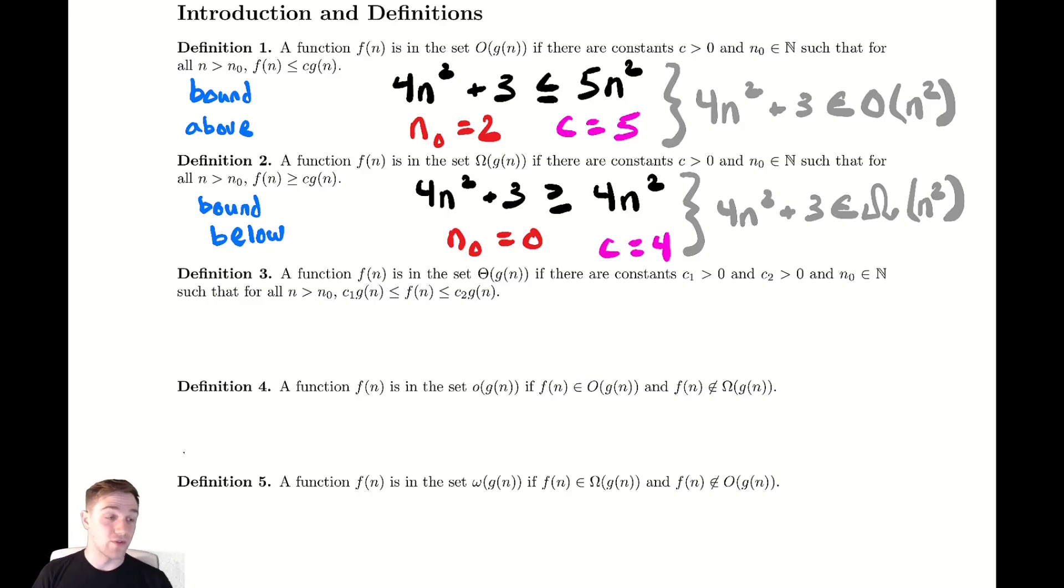So the first definition, the one for big O, is designed to help us capture the idea that we are growing no faster than g(n). The second definition, big Ω, is to capture the idea of growing at least as fast as. So we're growing no faster than a quadratic function and we're growing no slower than a quadratic function. It would be nice if we had an idea to describe growing about the same rate as a quadratic function. Conveniently we do and that notation is our theta notation.